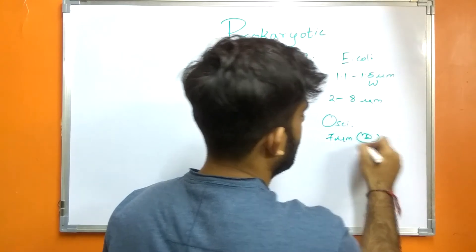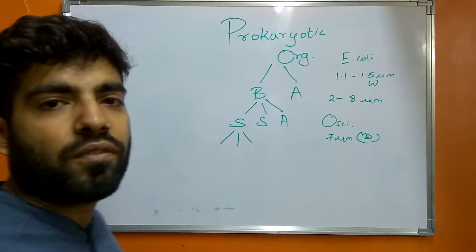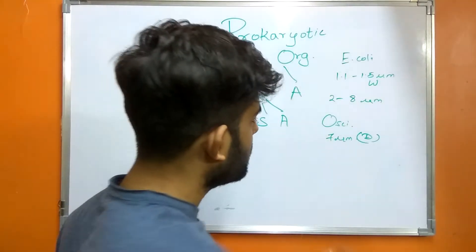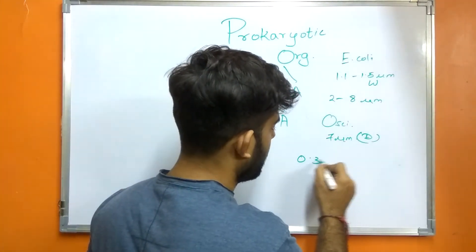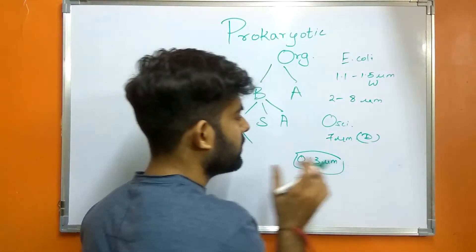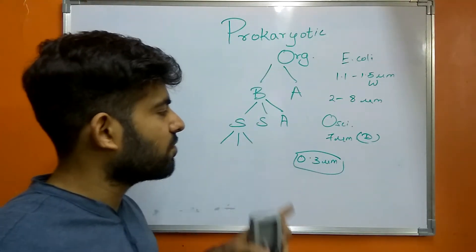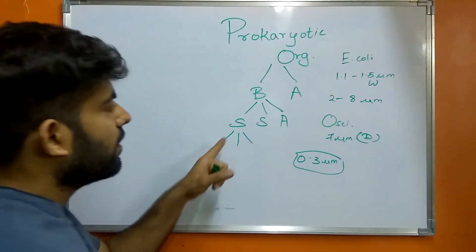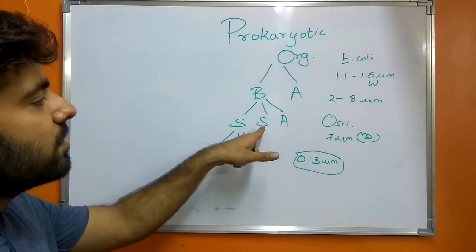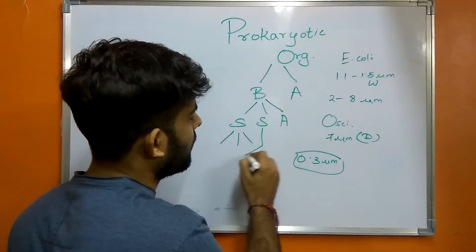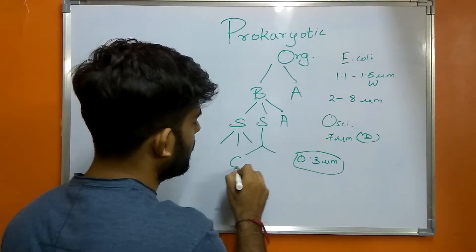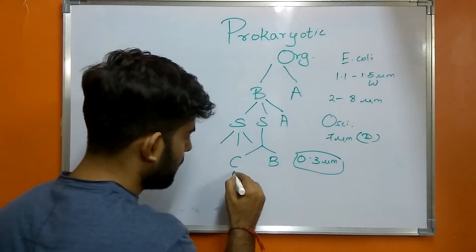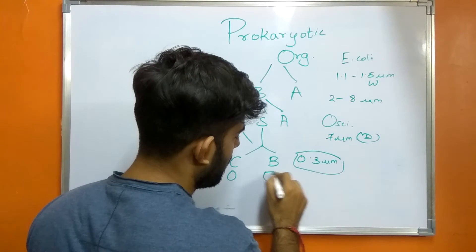The 7 micrometer diameter of Oscillatoria is almost the same size as a red blood cell. Mycoplasma has a range of 0.3 micrometers, which is approximately the size of the largest virus, the pox virus. Generally the bacteria I encounter are mostly cocci or bacilli type — cocci are circular and bacilli are rod-shaped.